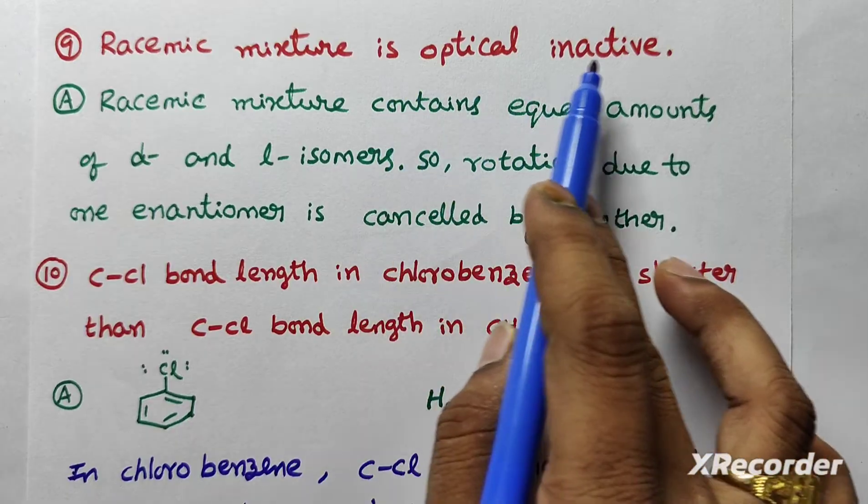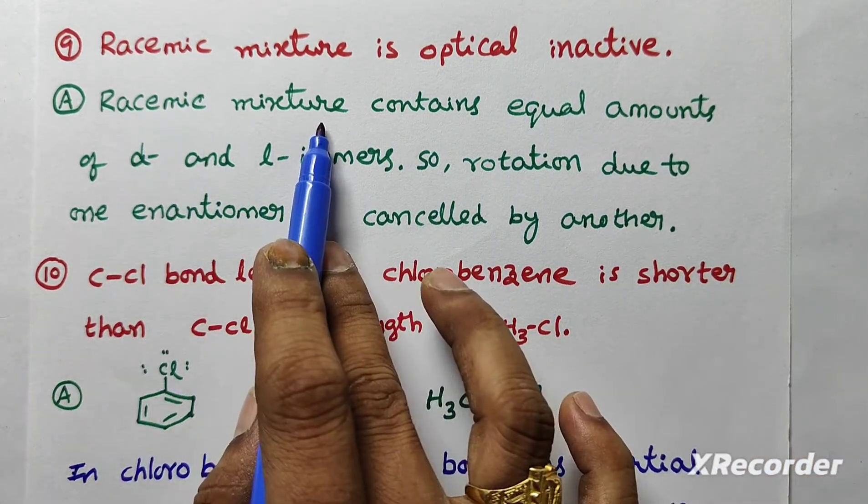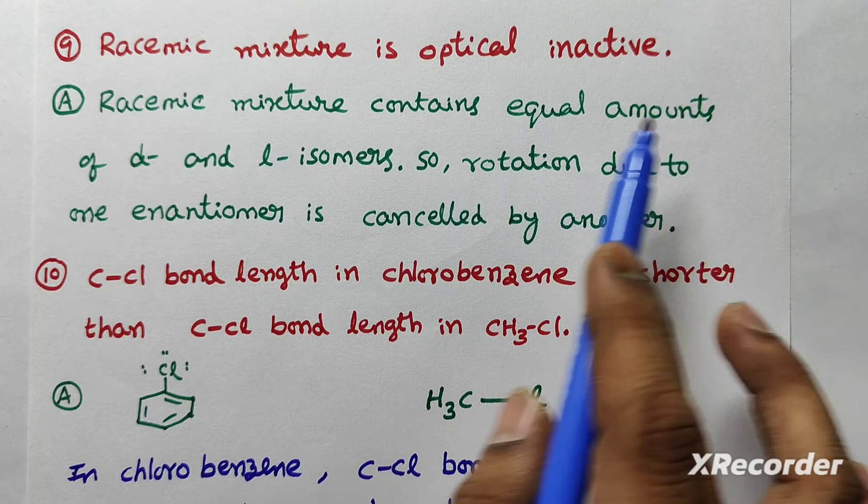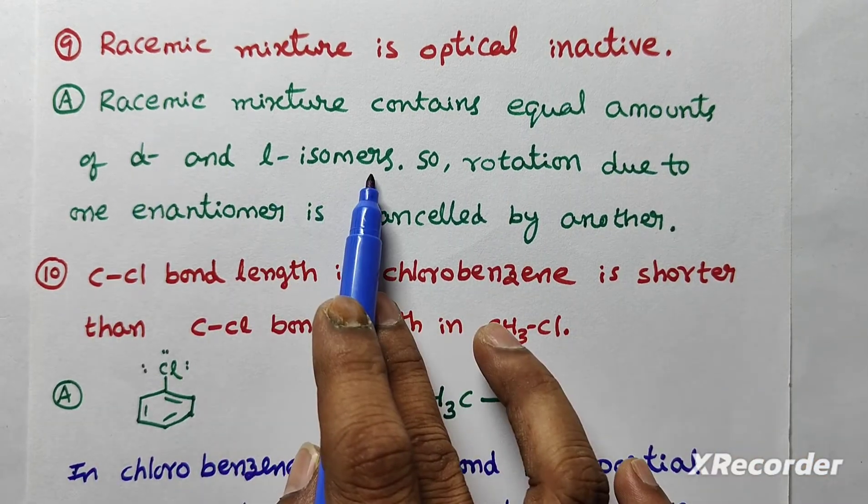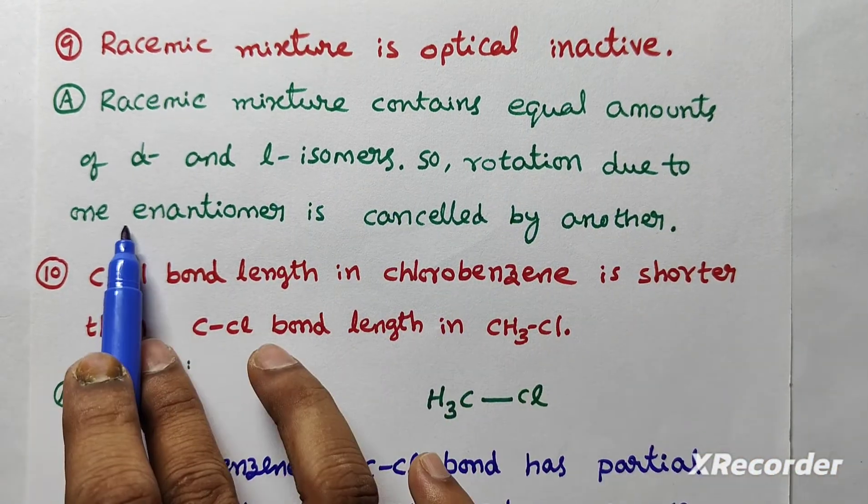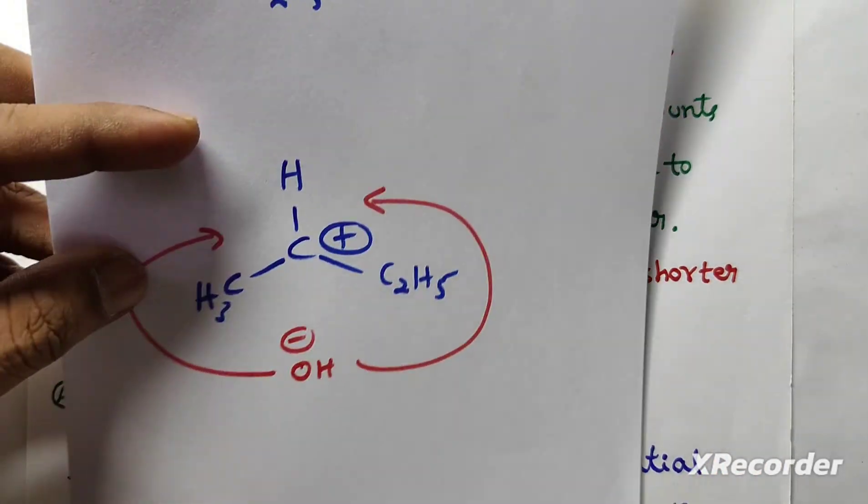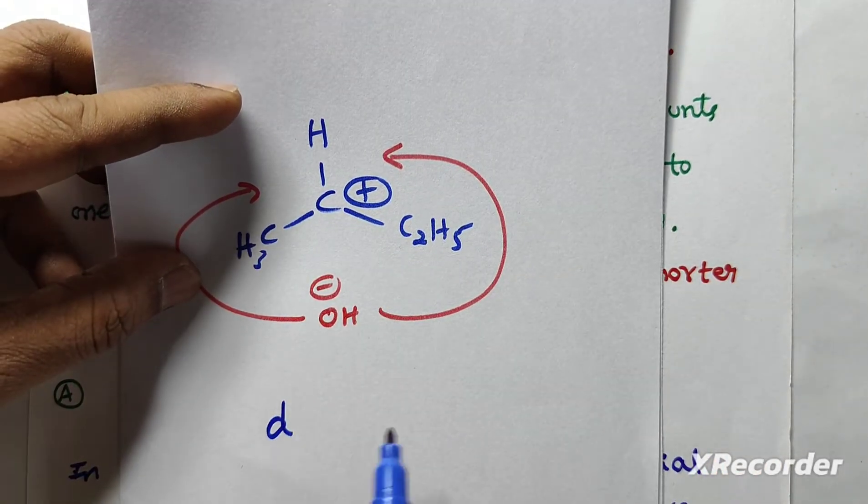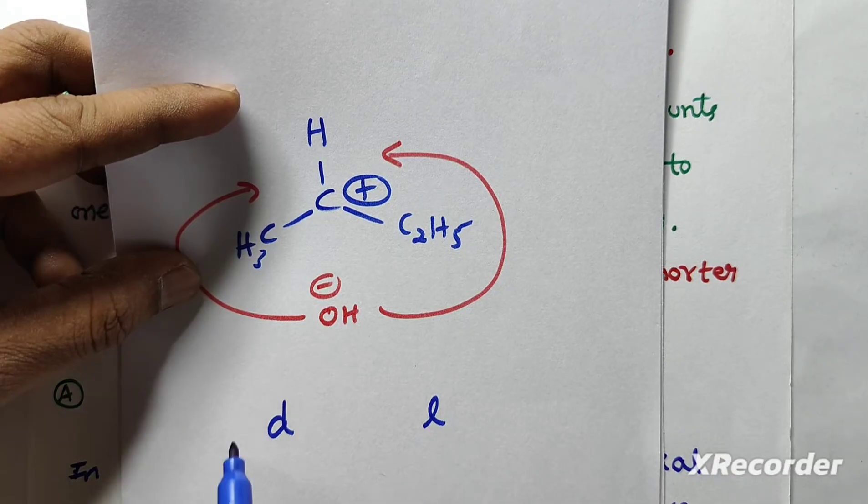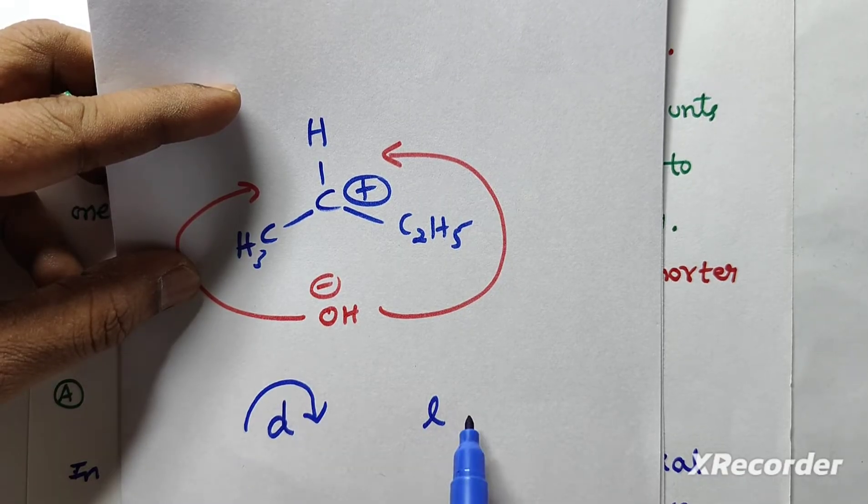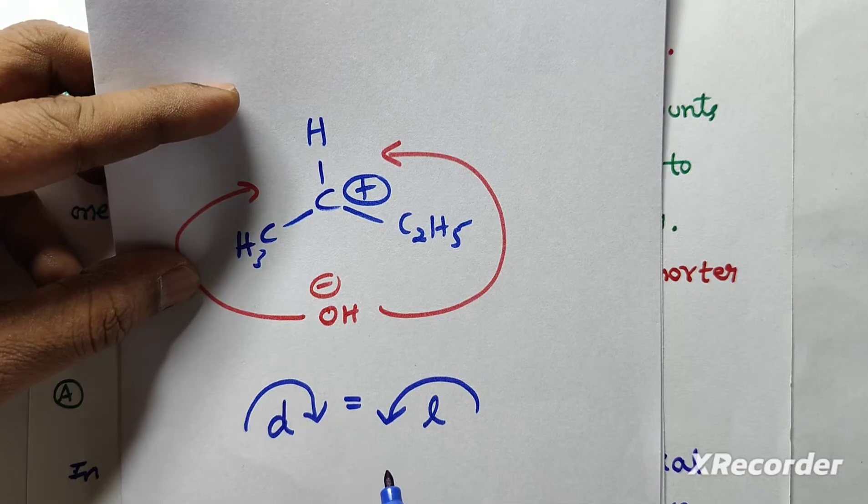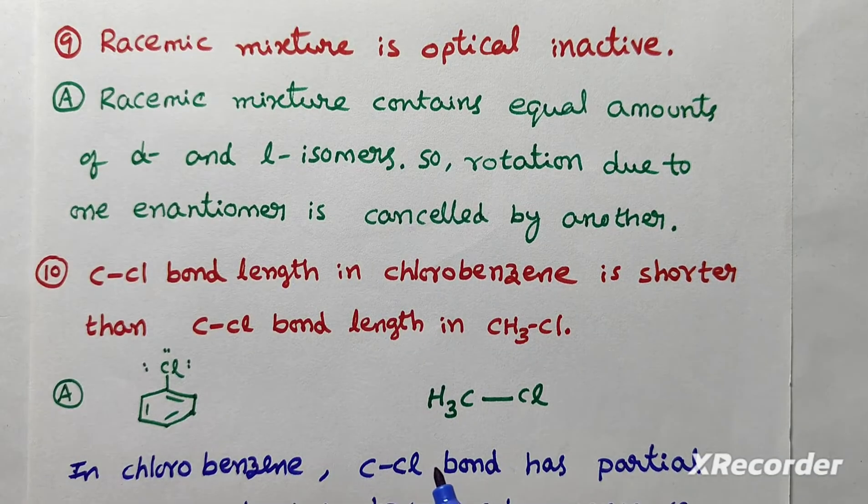Ninth question. Racemic mixture is optically inactive. Give reason. Racemic mixture contains equal amounts of dextro and levo isomers. So rotation due to one enantiomer is cancelled by another enantiomer. Dextro rotates clockwise, levo rotates anticlockwise and both are equal. Finally, rotation will become zero.